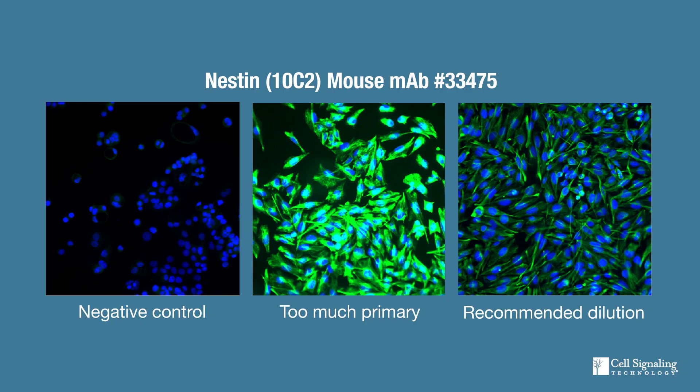If your negative control slide looks clean, but you're seeing too much signal in your experimental samples, you may have used too much antibody. It is possible to get too much signal when excess antibody is used, so make sure to titrate your antibodies appropriately, or use the recommended dilution found on the product page.